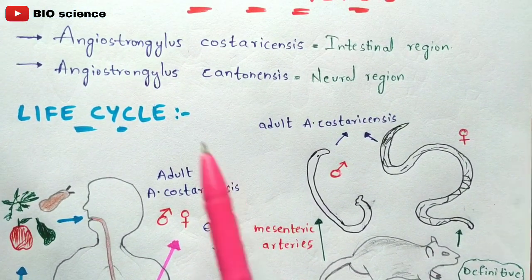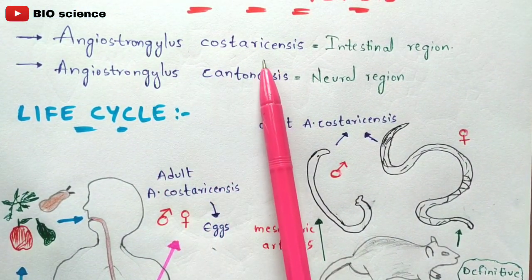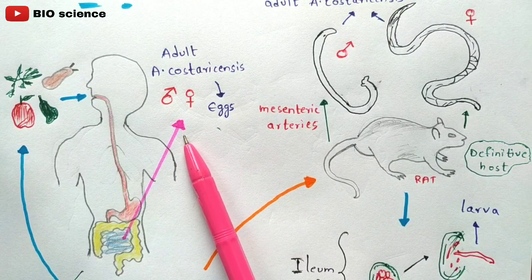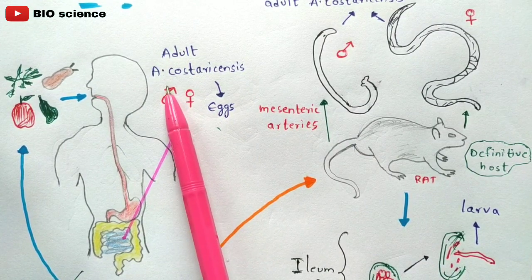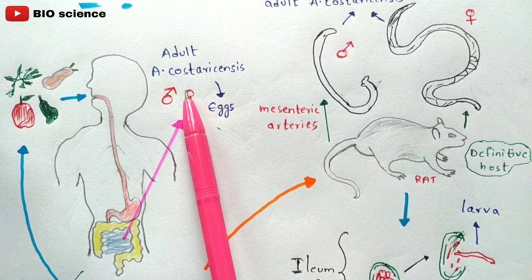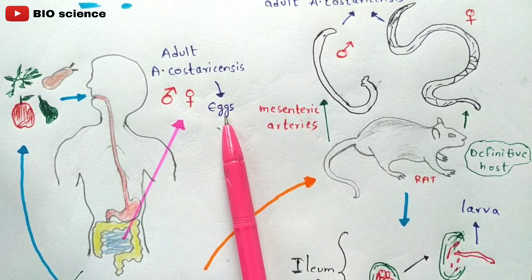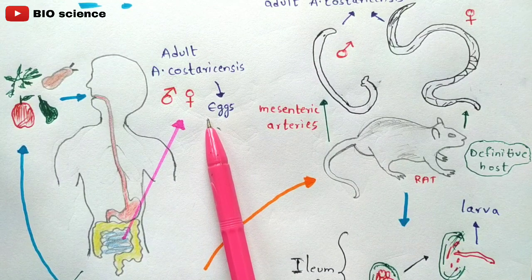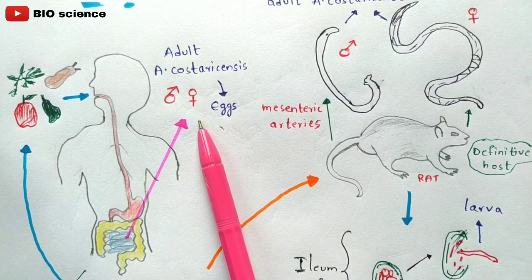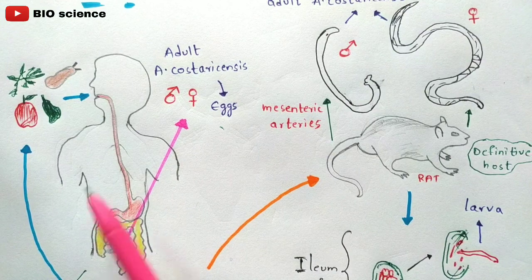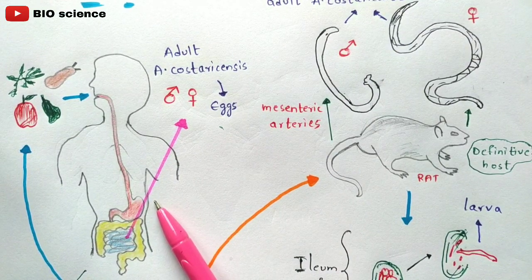So the parasite Angiostrongylus costaricensis causes damage to the intestinal region. Here in the intestine of the human, the worms develop into adult stage. They undergo copulation, release eggs, eggs undergo hatching, and first stage larvae are released along with fecal material from the human beings, after which the total life cycle repeats.